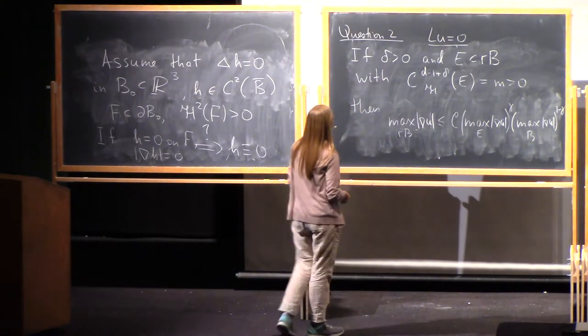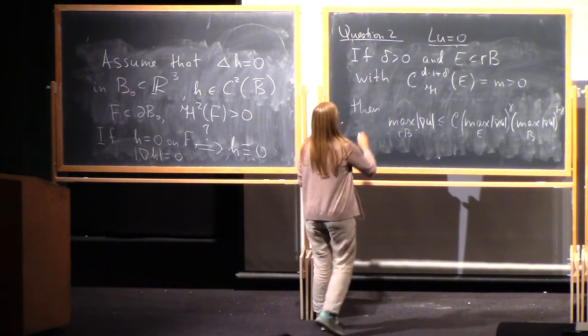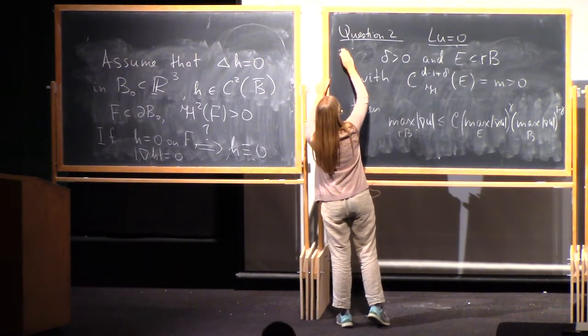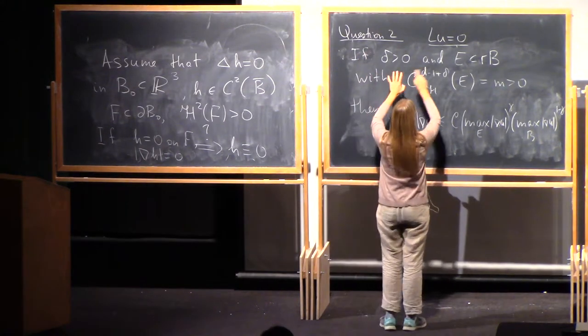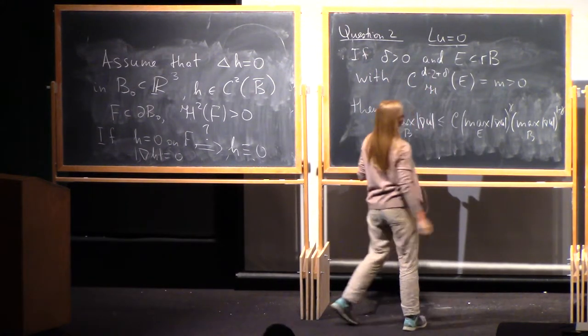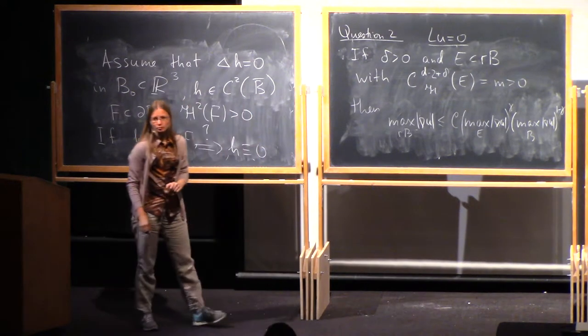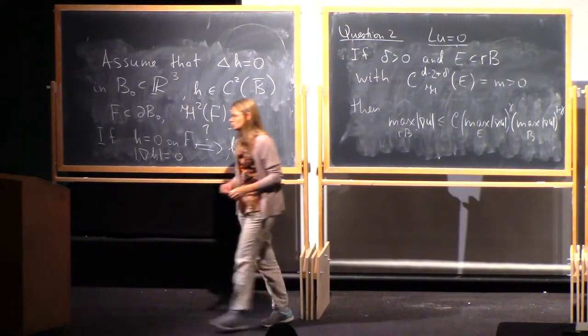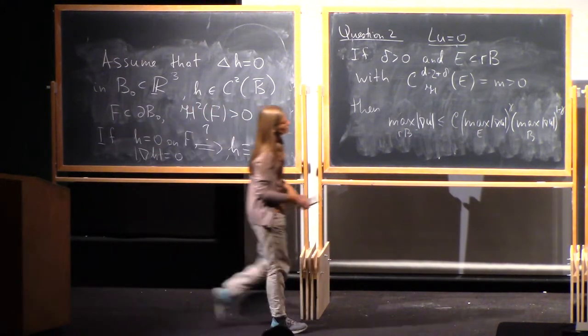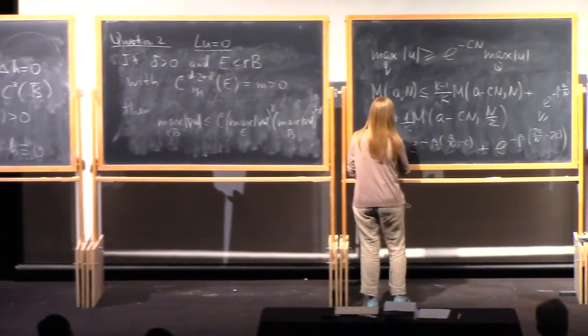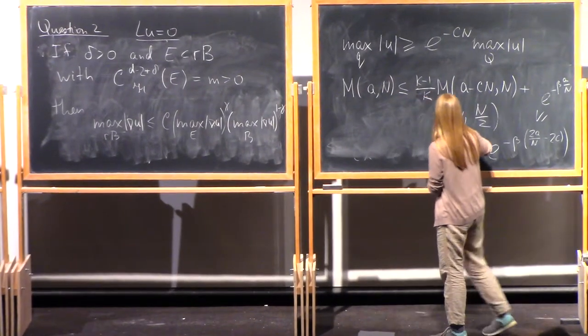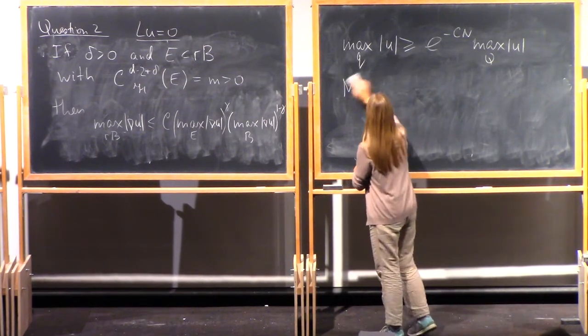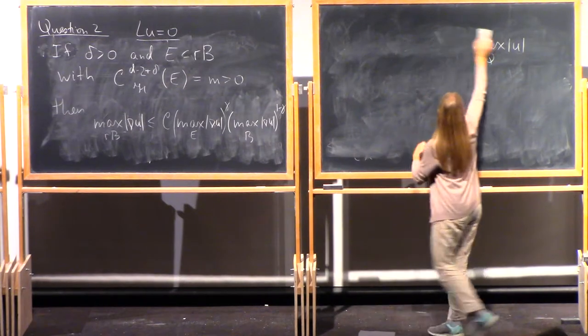What we can do is, so the question is if delta is positive can you extend smallness from the gradients if you assume the dimension is larger than d-2? And we don't know the answer. What we know is there are some situations of co-dimension larger than 1 when you can still do it.